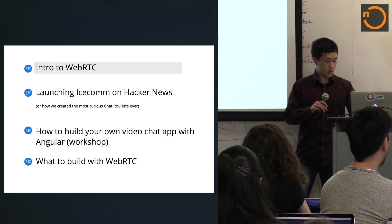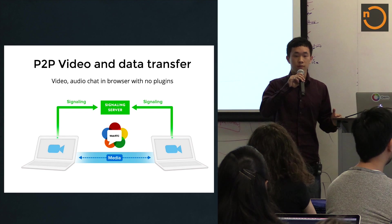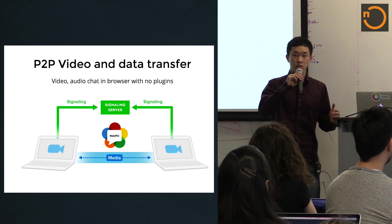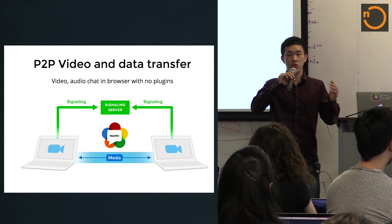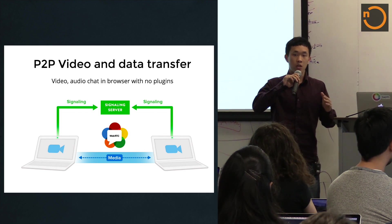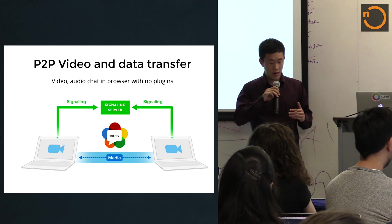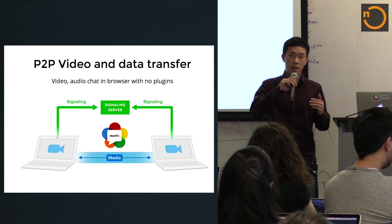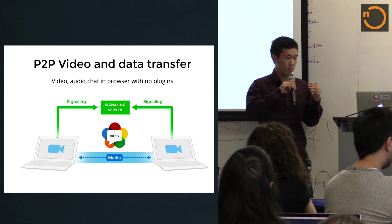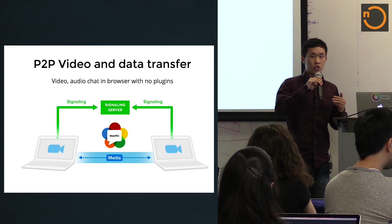WebRTC is a set of protocols that allow for browser-to-browser communication. You first need a single server just to exchange addresses between browsers, but as soon as that is established, you have a real peer-to-peer connection. It's trending right now — last month WebRTC 1.0 came out. The big deal is that you don't need a server, which saves a lot of costs because you don't need that extra infrastructure.